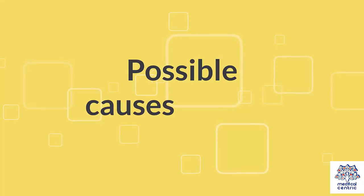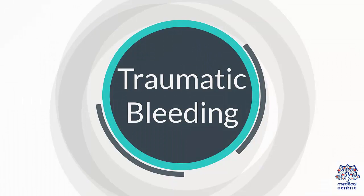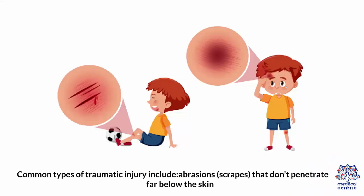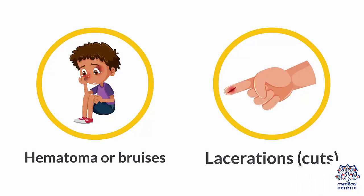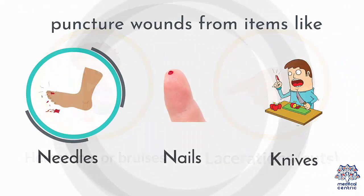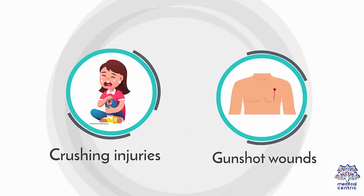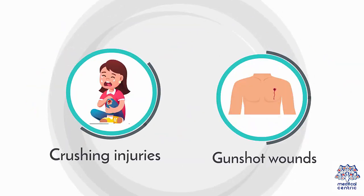Possible causes include: 1. Traumatic bleeding. An injury can cause traumatic bleeding. Traumatic injuries vary in their severity. Common types of traumatic injury include abrasions or scrapes that don't penetrate too far below the skin, hematoma or bruises, lacerations or cuts, puncture wounds from items like needles, nails or knives, crushing injuries, and gunshot wounds.